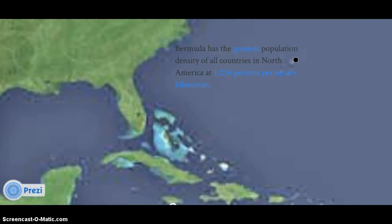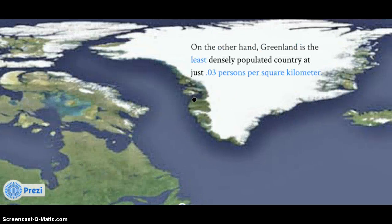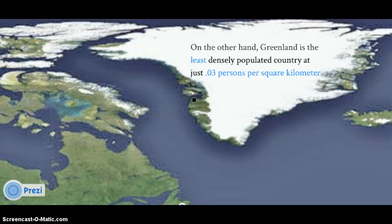Did you know? Bermuda has the greatest population density of all the countries in North America, at 1,226 persons per square kilometer. On the other hand, Greenland is the least densely populated country at just 0.03 persons per square kilometer.